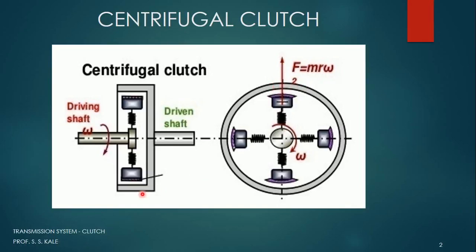When the shaft is rotating below a certain speed, the friction material will not come in contact with the outer casing. If the speed of that particular plate increases, centrifugal force acts on these four parts. Centrifugal force can be calculated by M·R·ω, where M is the mass, R is the radius, and ω is the angular velocity of that particular part. Currently, the friction material is not in contact with the circular peripheral part, and hence power will not be transmitted from the driving shaft.